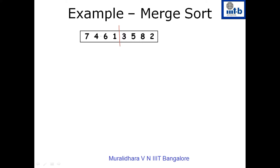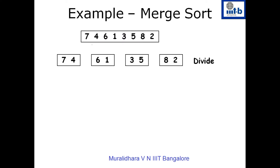When sorting the left-hand side, we again divide it in half. So the first part will have seven and four, and then we will have six and one. Similarly, when recursively solving the sequence on the right-hand side, we further divide it into half. Eventually, we divide the array into pairs: seven and four, six and one, three and five, and eight and two. Now we sort these sequences.